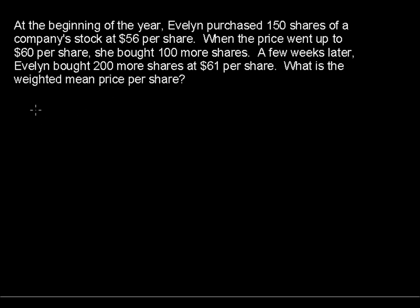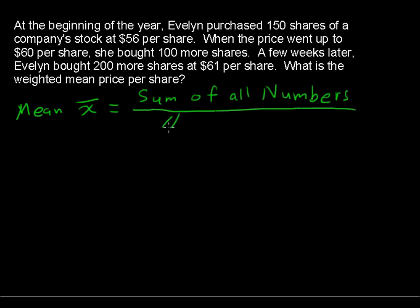We're going to build the weighted mean by looking first at just the mean. The mean, x-bar (sample mean), equals the sum of all the numbers in your data set divided by the number of numbers. In this case, we'll find that we have 450 numbers when we get to defining that weighted mean.